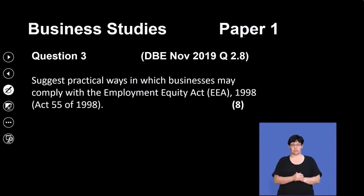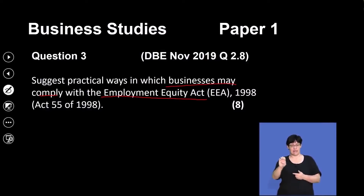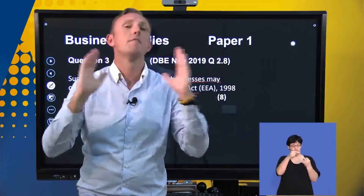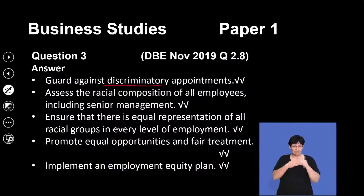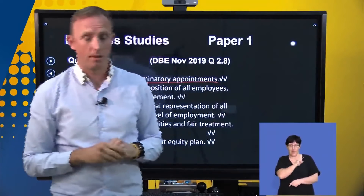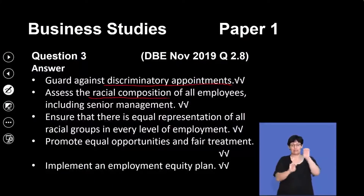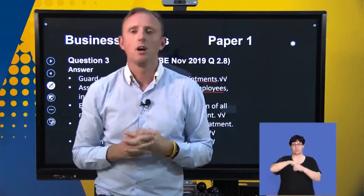Let's move on to the next question: suggest practical ways in which a business may comply with the Employment Equity Act. This is an act that a lot of people get confused with in terms of the Broad-Based Black Economic Empowerment Act as well as the Labour Relations Act, so you want to make sure you have a very good understanding between the three acts. Firstly, you have to guard against any discriminatory appointments — you cannot employ someone because you've discriminated against someone else, no matter the grounds. We also have to assess the racial composition of all employees, including senior management. The Employment Equity Act wants to create a workforce that is representative of the demographics of the country.